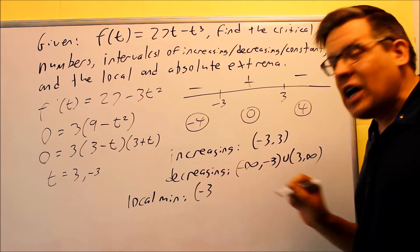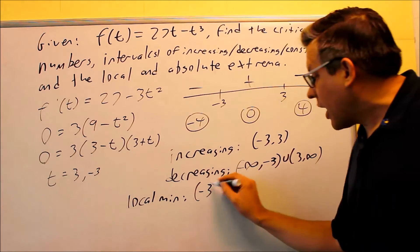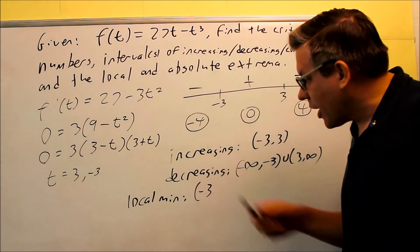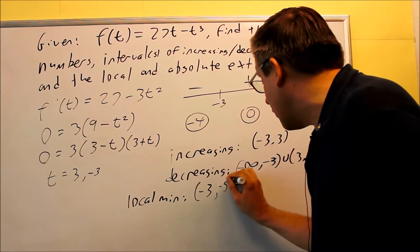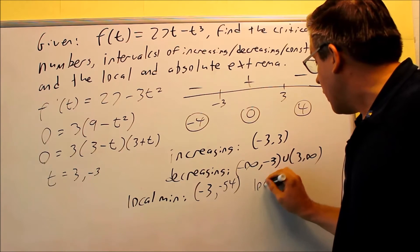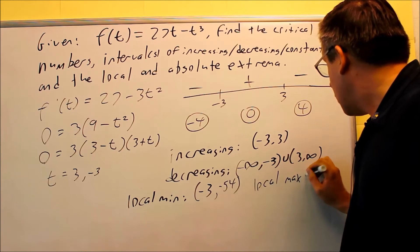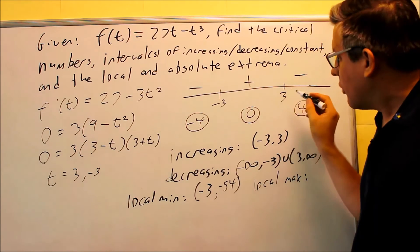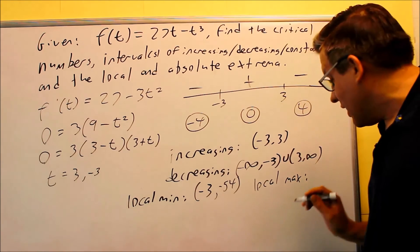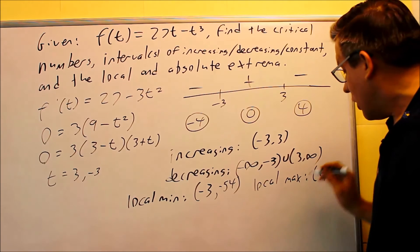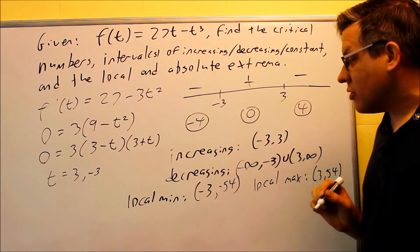Now, you want to find the y value that goes with that. So you want to put negative 3 into the original one. So if you work it out, you're going to get negative 3 and negative 54. And then we're going to look for the local maximum. That's where you have an increasing and a decreasing. So that's going to occur at 3. 3 you'll put into the original function and you're going to get positive 54 as the answer.